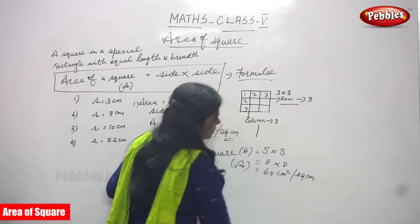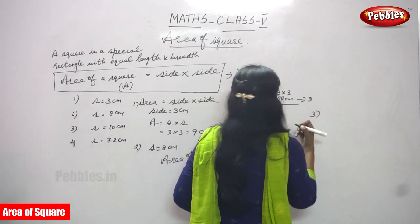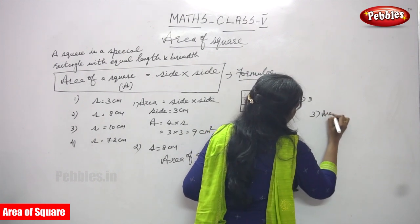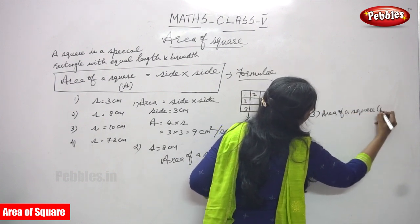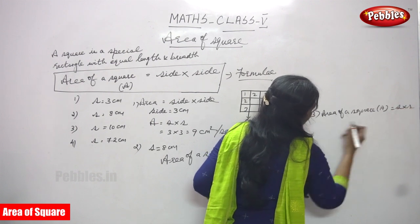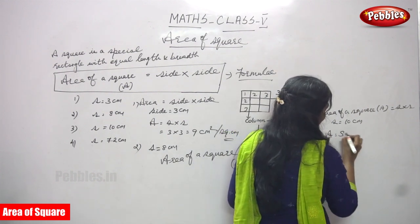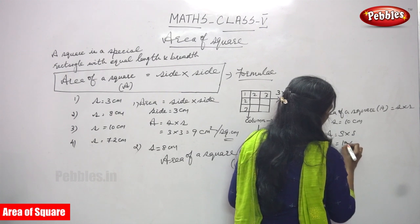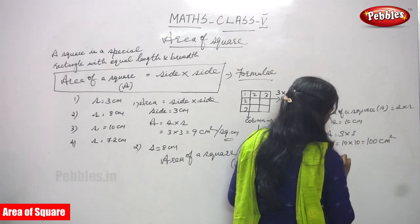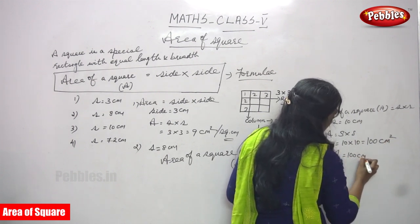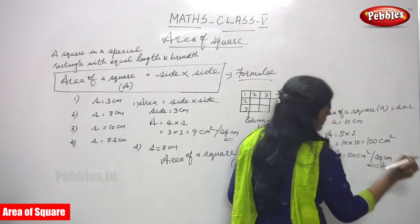Now we are going to solve the third problem. Area of a square is equal to A, that is s into s. Side is equal to 10 centimeters, so you have to find A — that is s into s, so 10 into 10 centimeter. You get 100 centimeter squared. Area is equal to 100 centimeter squared. This is the right answer for the third question.